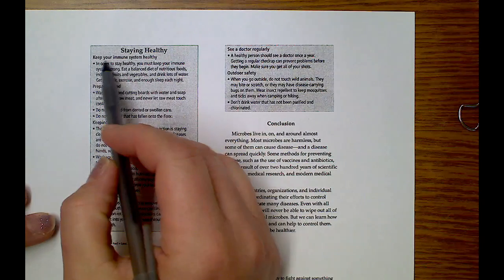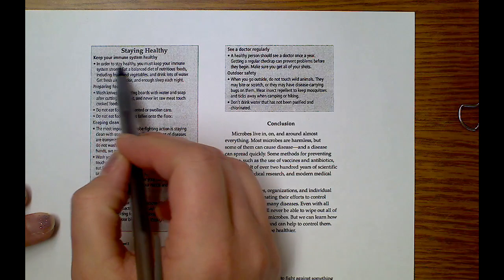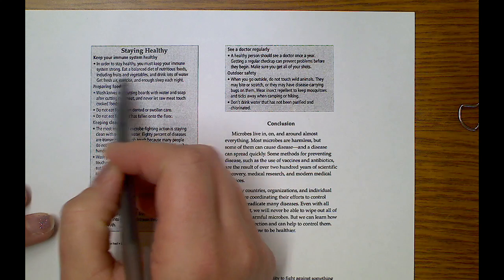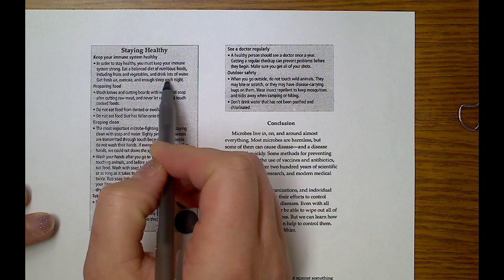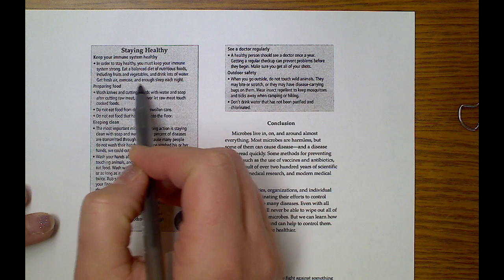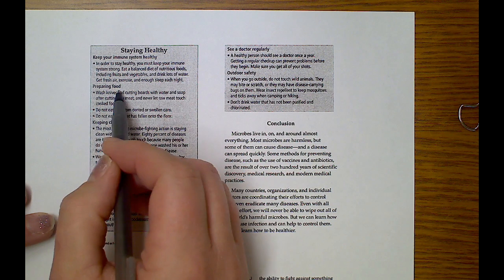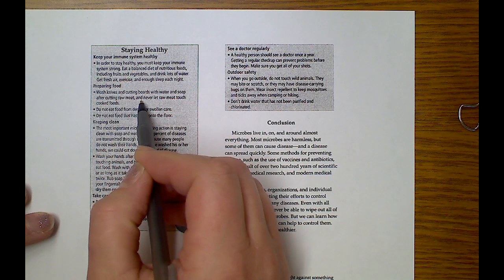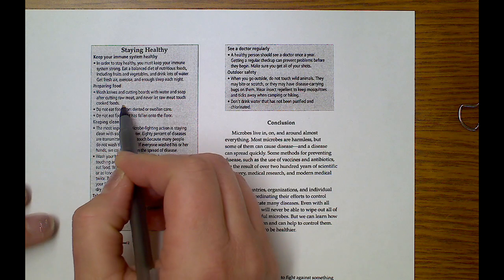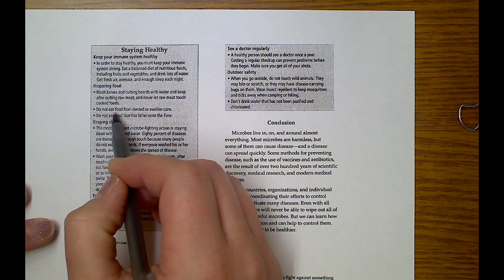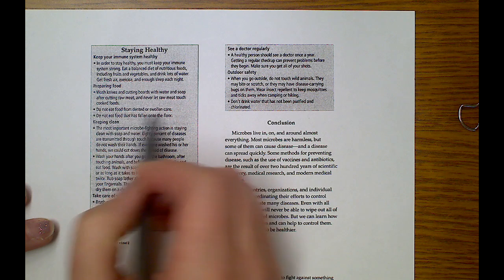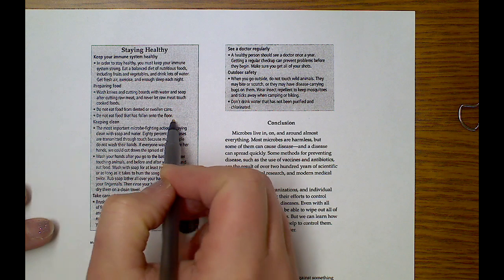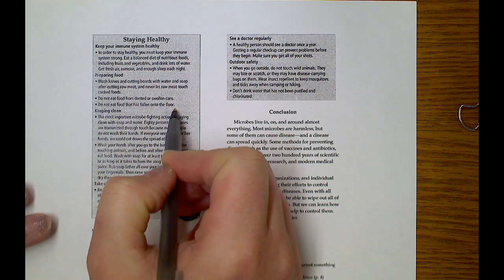Staying Healthy. Keep your immune system healthy. In order to stay healthy, you must keep your immune system strong. Eat a balanced diet of nutritious food including fruits and vegetables and drink lots of water. Get fresh air, exercise, and enough sleep each night. Preparing food: wash knives and cutting boards with water and soap after cutting raw meat and never let raw meat touch cooked foods. Do not eat food from dented or swollen cans. Do not eat food that has fallen onto the floor.